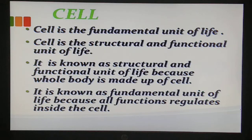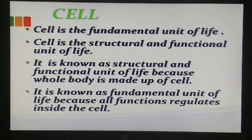Schleiden and Schwann independently asserted that all plants and animals are made up of cells, and they both gave the cell theory which was comprised of postulates. The first was that all organisms are composed of cells. The second is that all metabolic reactions - whether respiration, diffusion, or osmosis - all take place inside the cells.